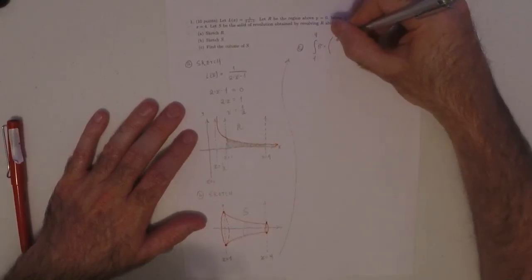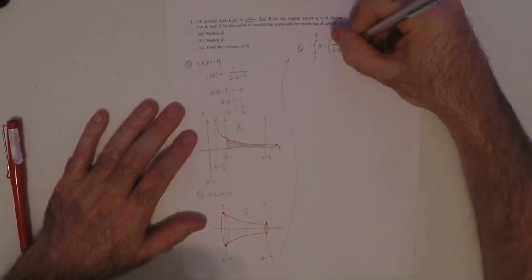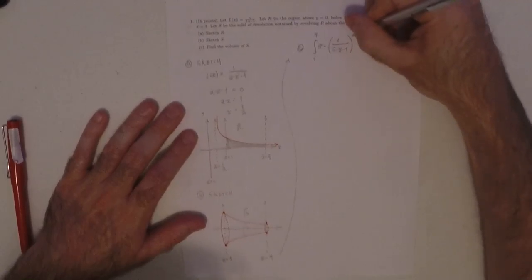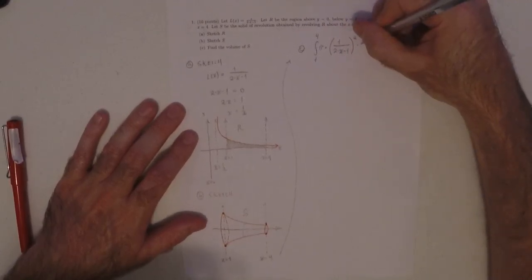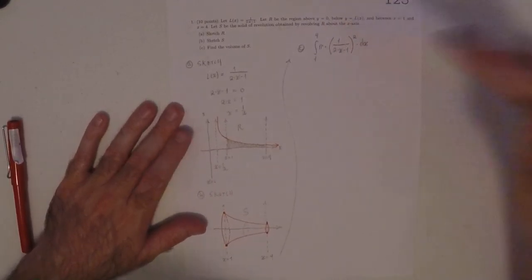And then, the radius squared times the height.